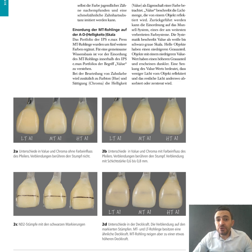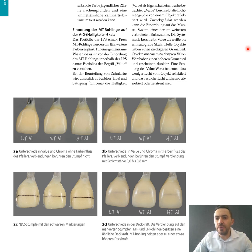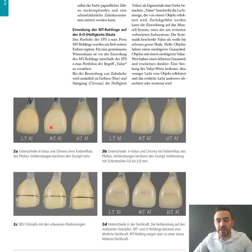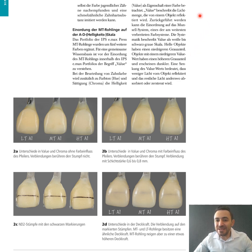So which ingots retain more brightness and which provide more masking? On this slide we see the three translucent ingots of the same 0.6 to 0.8 mm thickness, all placed on stump shade ND2. The idea of comparing them is to figure out the role of brightness and translucency in achieving shade harmony. Starting with figure 2a, I placed those three veneers on the ND2 stump, but they're still not touching the stump completely. Note the difference without the background effect — MT is still the brightest.